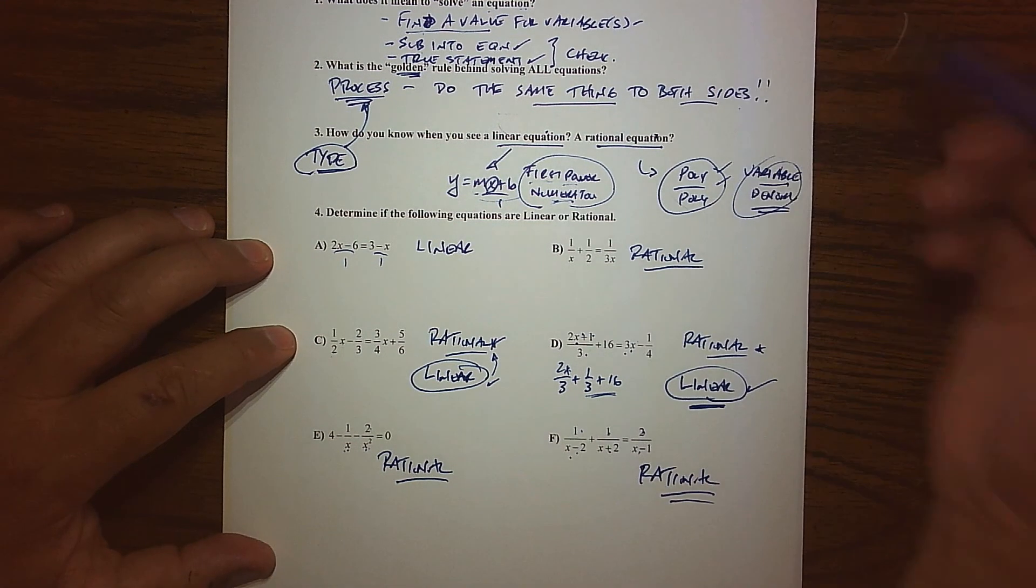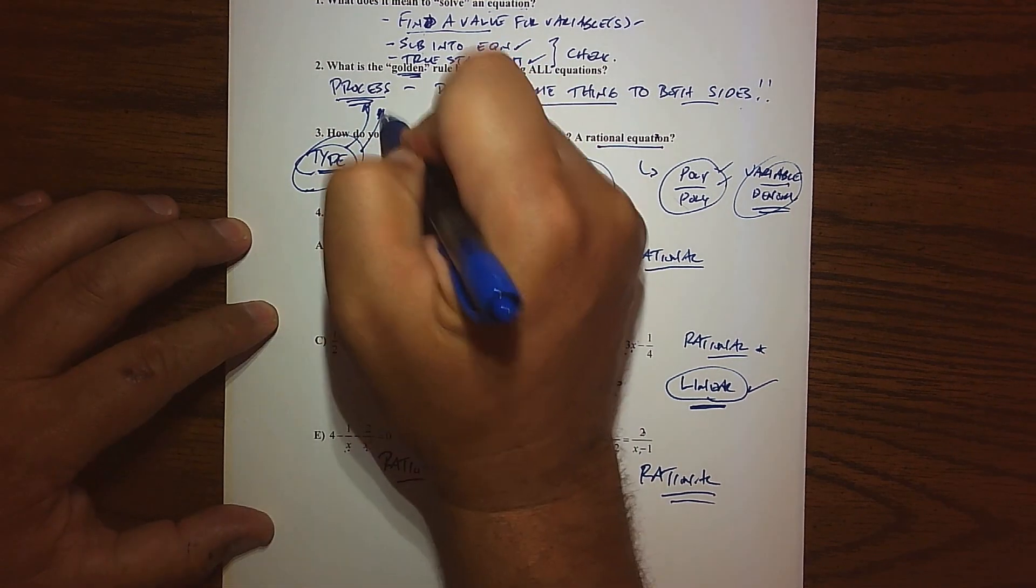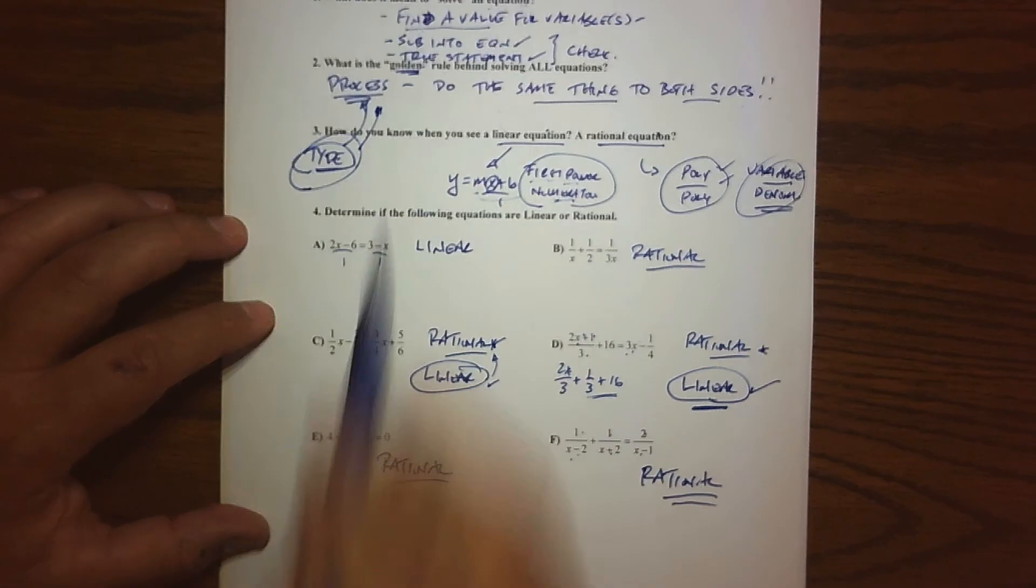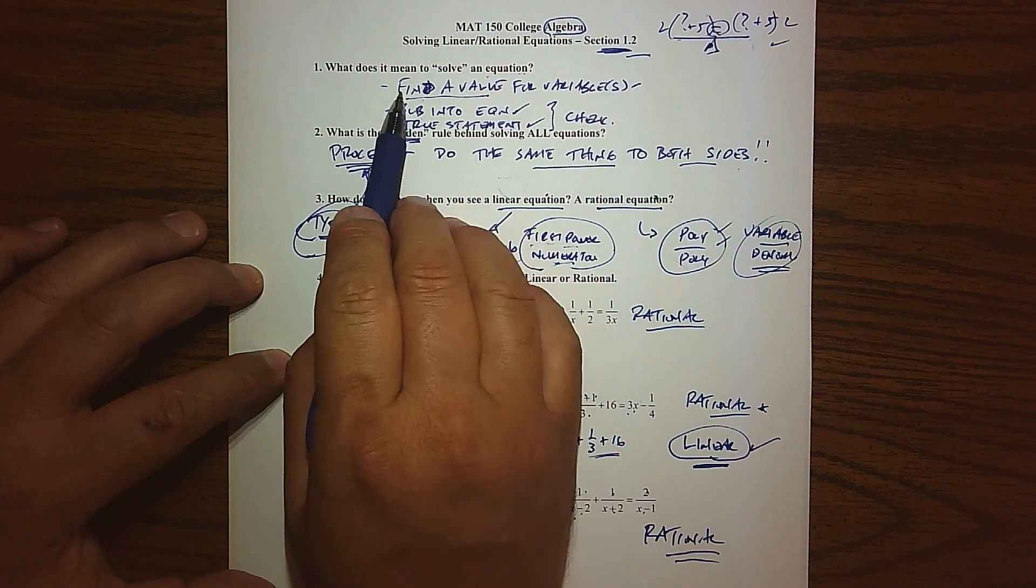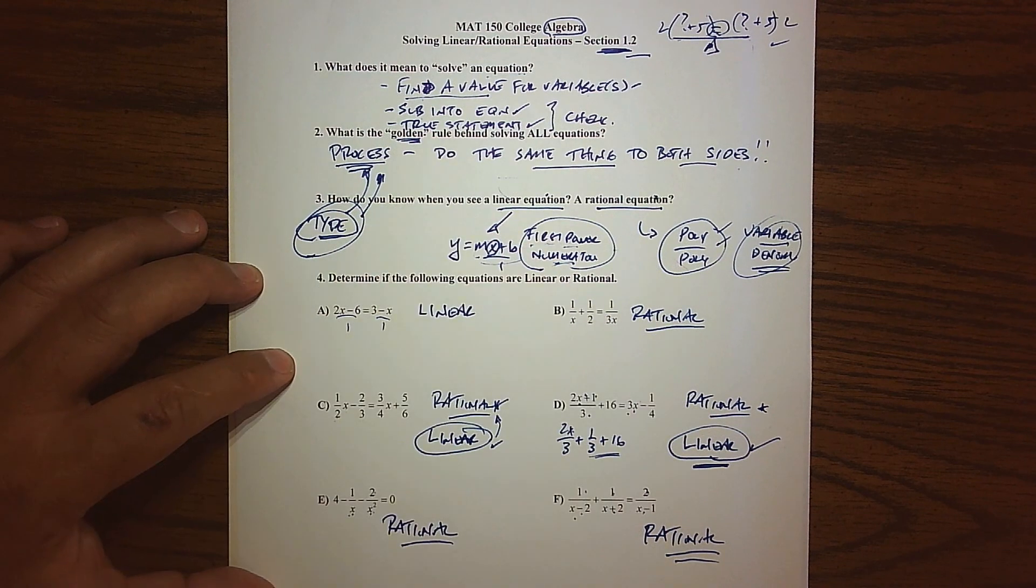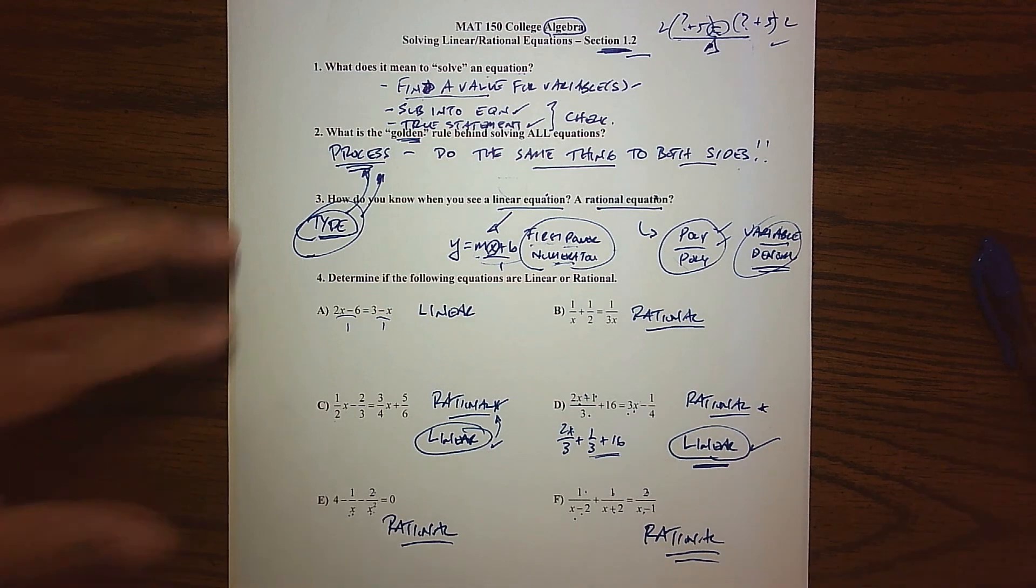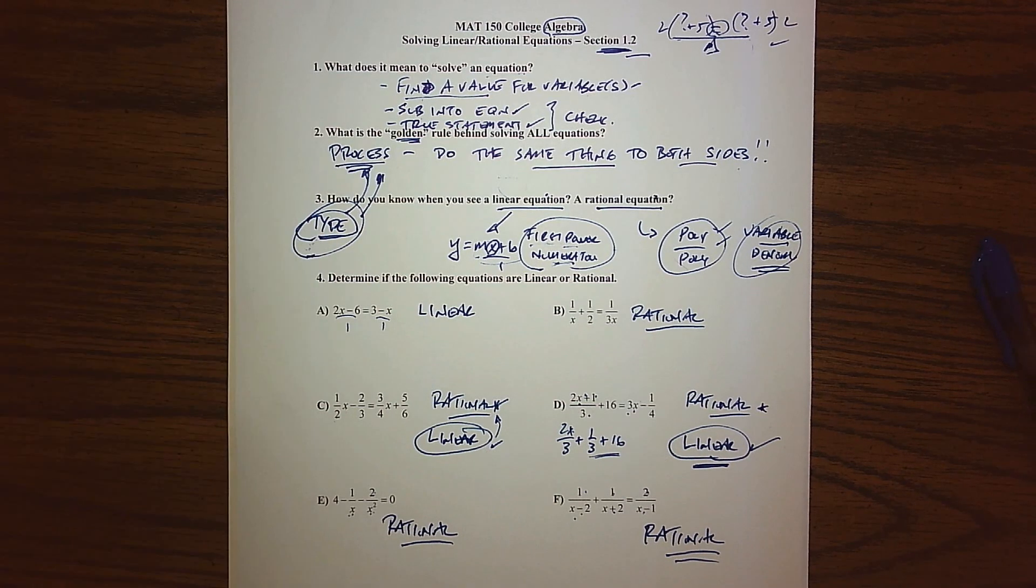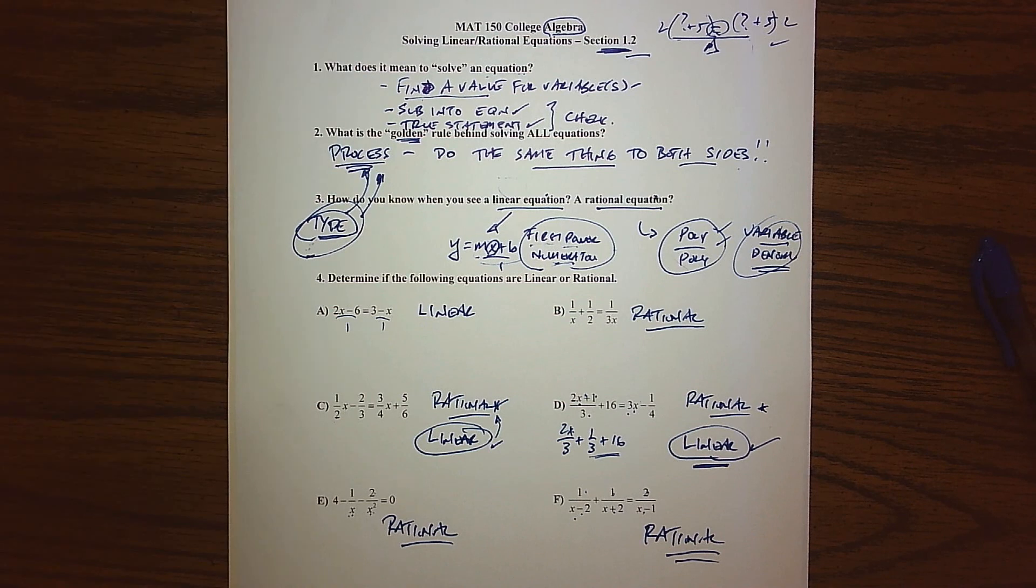As we move through more sections, we'll see some more categories, some more types, which tells us which process we're going to use. We're always going to use the golden rule. Whatever you do on one side, we do the other. And the whole idea is we have to find a value that when I plug it in, makes the situation true. So now that we've done some groundwork and some identification, in the next video, we'll actually talk and put this in the process. We'll actually solve some equations and find those values that when I sub in, make it true. So I'll see you guys in the next video.